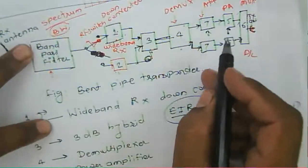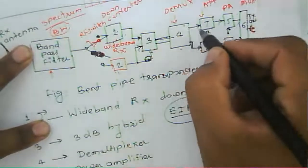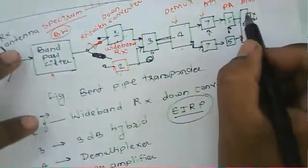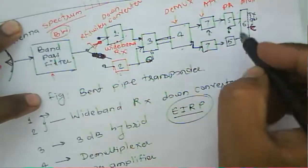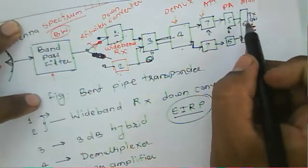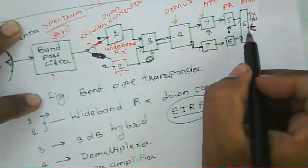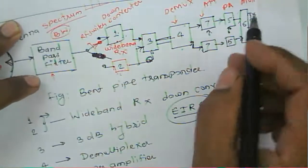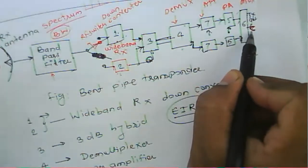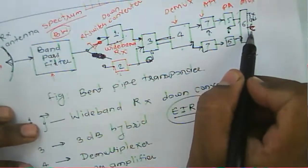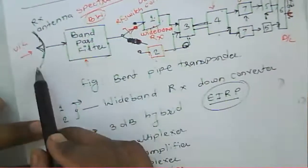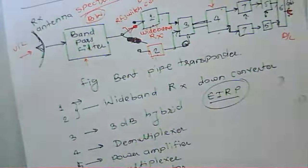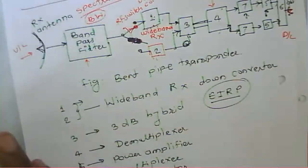The demultiplexer separates the channels, and then the multiplexer combines all the channels. The combined output is sent to the transmitting antenna, which transmits the signal to the earth station. Both the transmitting and receiving antennas used in the transponder are the same.